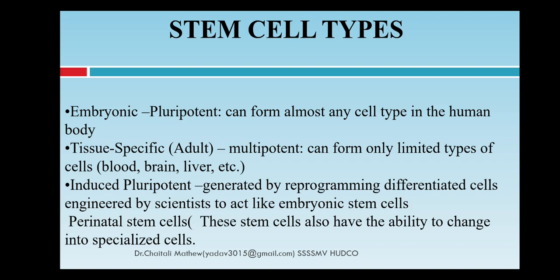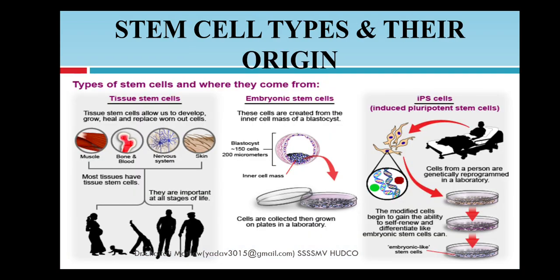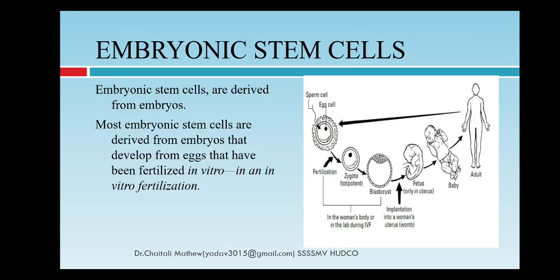Perinatal cells are stem cells that also have the ability to change into specialized cells. These are the types of stem cells according to their origin. Now we focus on embryonic stem cells. As the name suggests, embryonic stem cells are derived from an embryo — most are derived from embryos that are specially developed from eggs fertilized by in vitro fertilization. Fertilization occurs, a zygote develops, blastocyst formation occurs, then a fetus, and ultimately whole adult body development from fertilized embryonic cells.